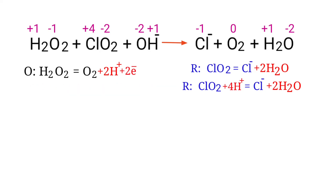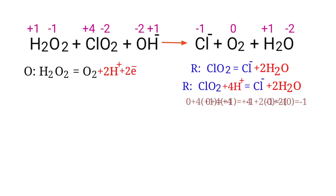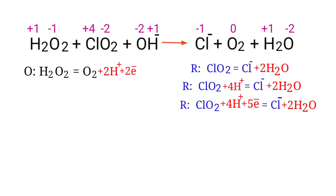Now balance the charges in the reduction half reaction. Both sides are not equal, so add 5 electrons to the left side to make it equal to minus one. The addition of charges is now equal in the reduction half reaction.